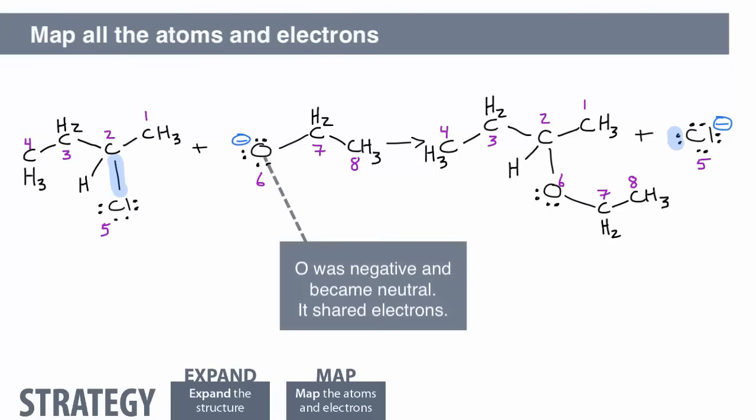Oxygen was negative and became neutral. Therefore, it shared electrons. It started with three non-bonding electron pairs and finished with only two.